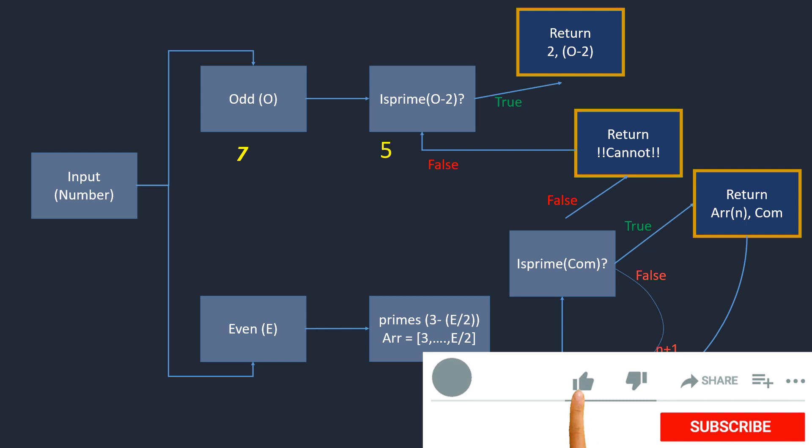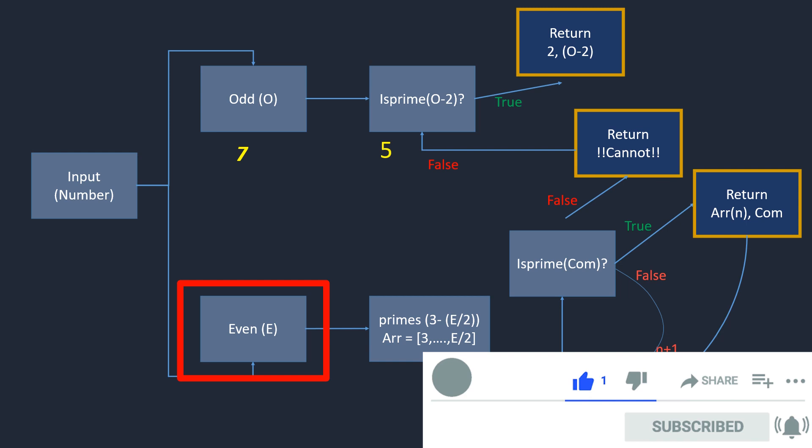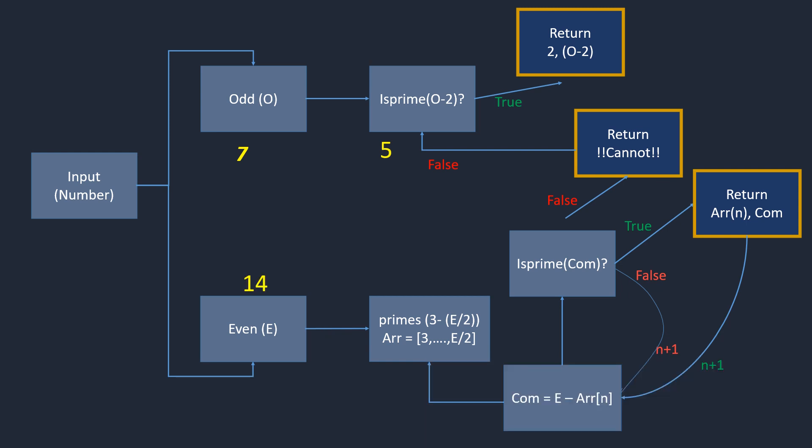Now, what if the user entered an even number, say 14? The next step is to sort out all the prime numbers starting from 3 up to half of that even number, which in this case is 7.